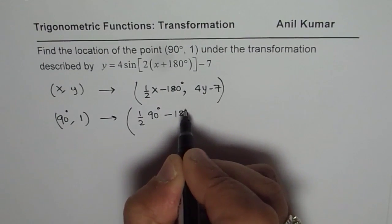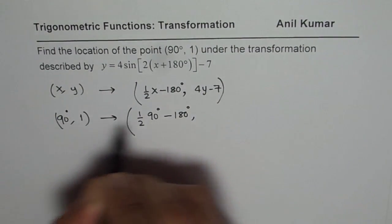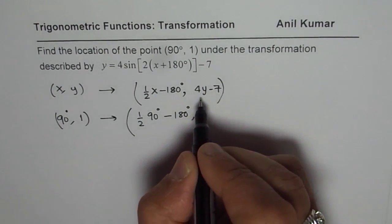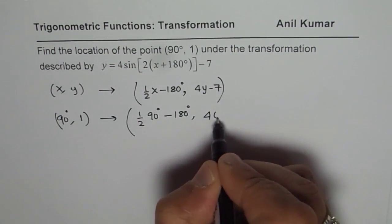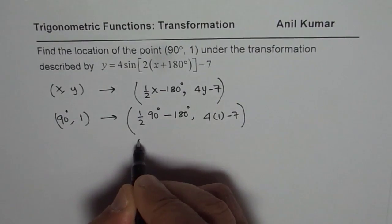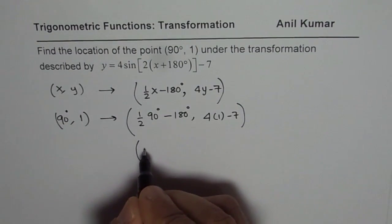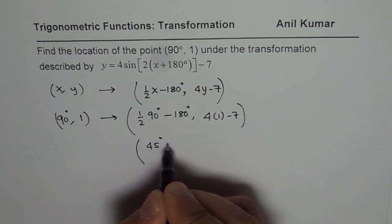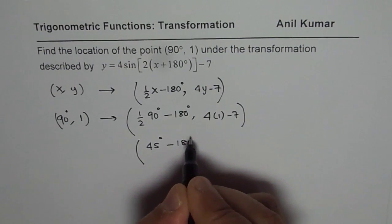That is the change, the new image point. And the y value will be 4 times 1 minus 7, which you can say will be half of this is 45 degrees, 45 degrees minus 180 degrees, 4 minus 7.